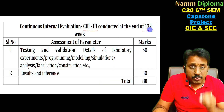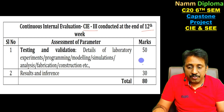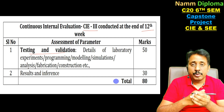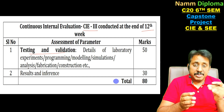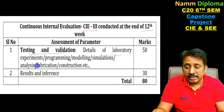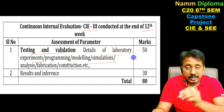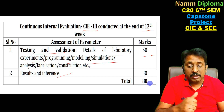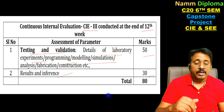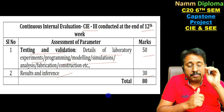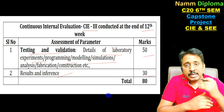CIE 3 is at the end of the 12th week, also worth 80 marks, divided as 50 plus 30. The 50 marks cover testing and validation — in and out work, lab experiments, programming, simulation, etc. The 30 marks cover results and inference. Complete your project and develop a report for CIE 3 to earn your 80 marks. CIE 1, CIE 2, and CIE 3 are all interlinked.